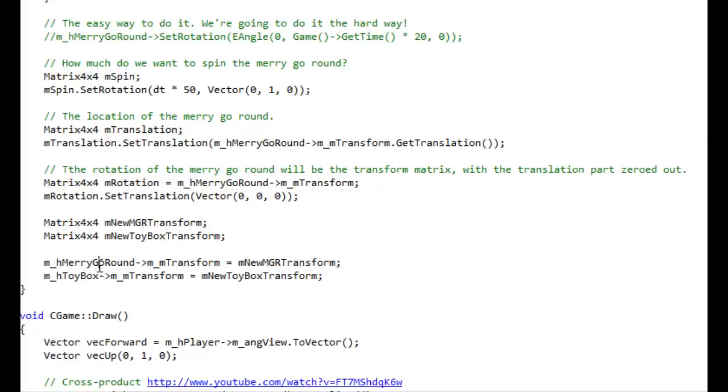So I've gone ahead and made a merry-go-round object and a toy box object. And I made a matrix that will represent the spin. So we're setting the rotation of that matrix to be some value spun around the up vector. The 0, 1, 0 is the up vector. And so DT times 50, that just means we're going 50 degrees per second. And then I'm grabbing the T matrix and the R matrix of the merry-go-round. So we have all the tools we need. Let's get started.